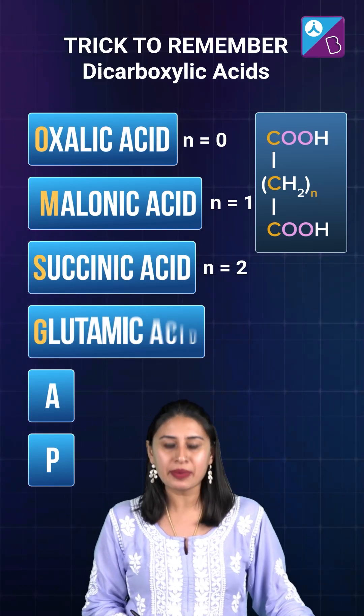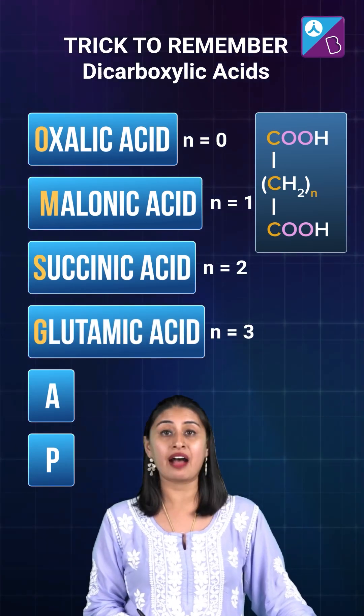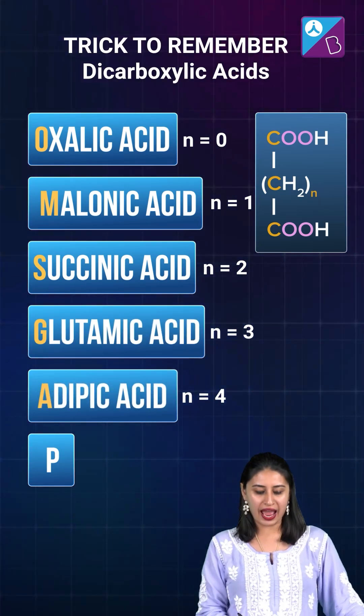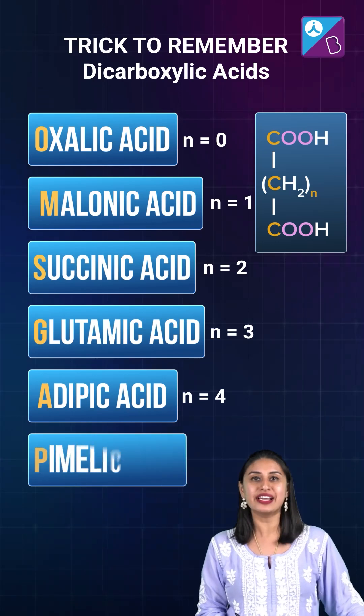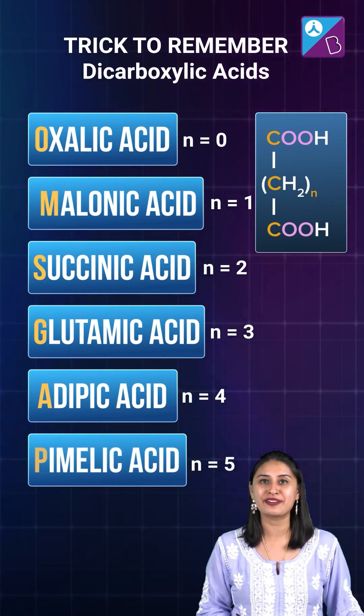Then we have glutaric acid, N is equal to three. Then we have adipic acid, N is equal to four. And then we have pimelic acid, N is equal to five.